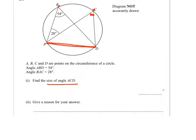So ACD equals 54 and the reason for it is angles on the same segment, this is the biggest segment of the circle, that's this side.